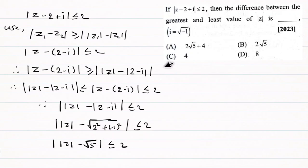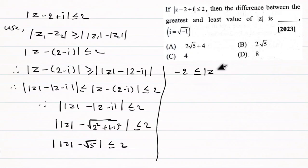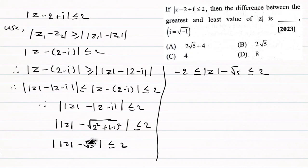From this we get the double inequality: minus 2 is less than or equal to modulus of z minus root 5, which is less than or equal to 2. Since both quantities inside are scalar, the modulus gives plus or minus 2, yielding minus 2 less than or equal to modulus of z minus root 5 less than or equal to 2.